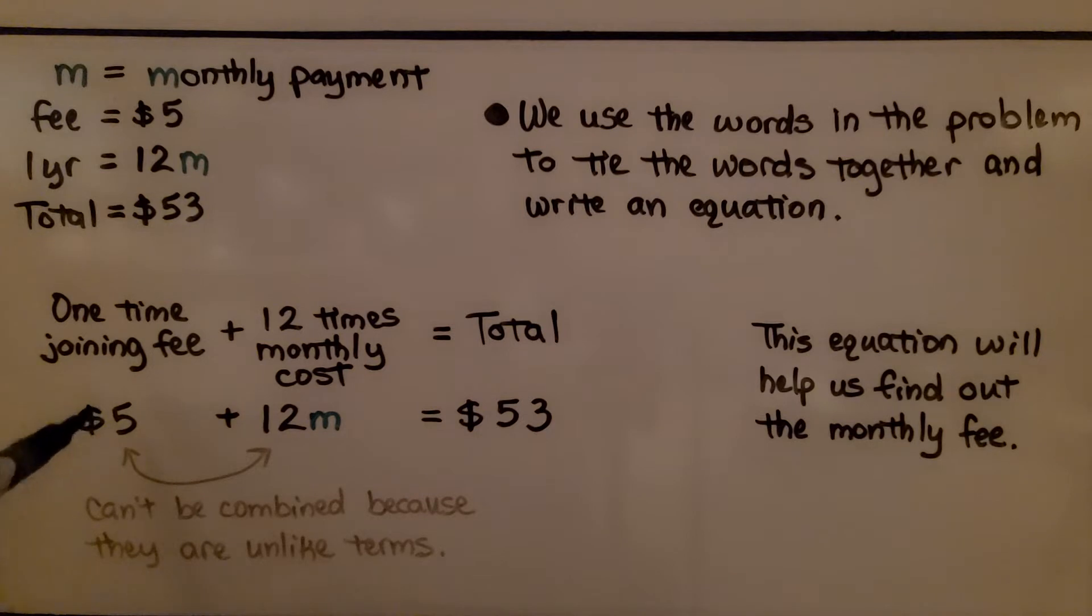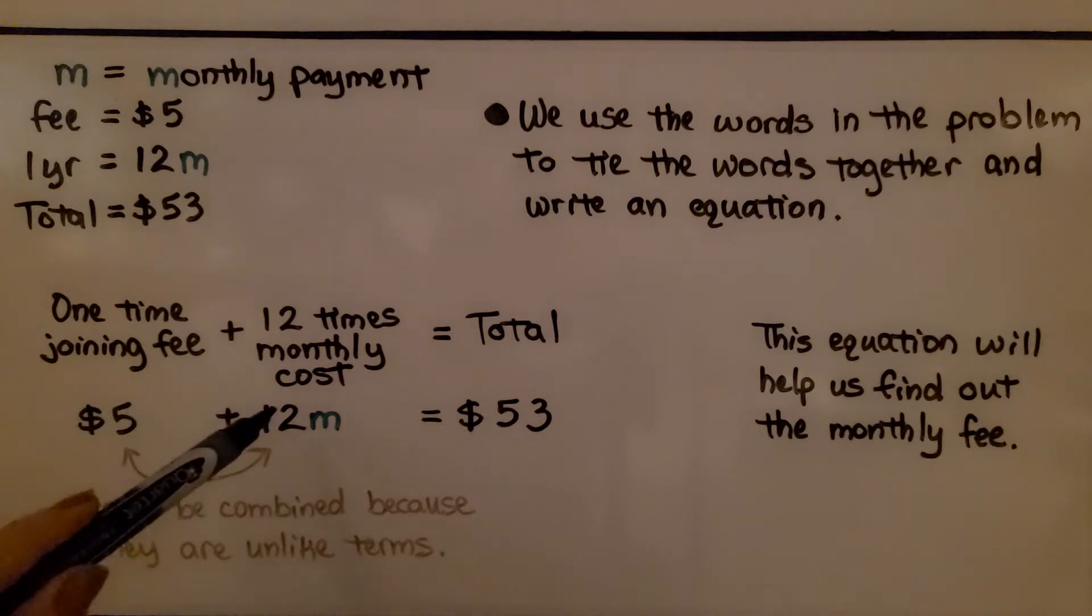Now we can't combine the $5 and the 12M because they're unlike terms. If this said 5M plus 12M, we would be able to combine them to be 17M. But these are unlike terms, so we cannot combine them. So this equation will help us find the monthly fee.